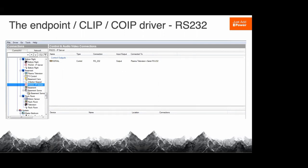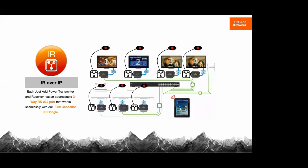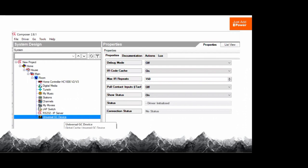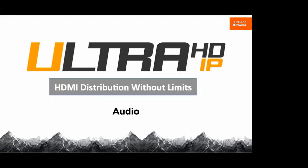IR over IP — we do this differently than most companies. We're not doing any type of pass-through; we didn't want to force people to use all inputs and outputs or add IO extenders. The way we route IR is over IP. Our IR dongle — we call it the 'flux capacitor' because we're more fun than most companies — uses the RS-232 connection on the Just Add Power piece and turns it into an IR blaster. We send that command across the network directly to the piece and control what's on the other end.